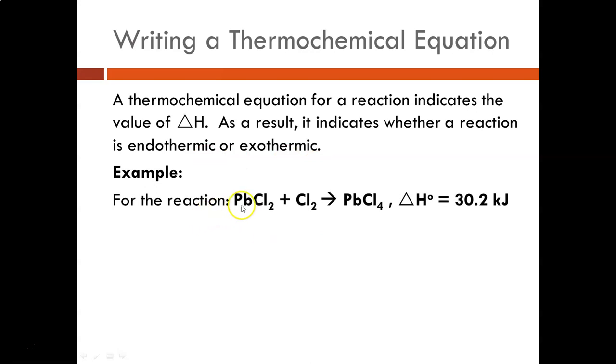So example, for the reaction lead 2 chloride plus chlorine to produce lead 4 chloride, the delta H is 30.2 kilojoules. Now it's a positive number. That means that this is an endothermic reaction. So I'm going to have to indicate that by putting this delta H with the reactants.